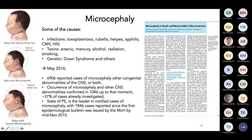Quick overview of microcephaly: what can cause it? Infections, toxins, or genetic causes. By May 2016 — about a year after the first case was flagged by the ultrasonographer in Pernambuco — nearly 7,000 reported cases of microcephaly or congenital abnormalities of the central nervous system had been reported in Brazil. Of those 7,000 suspected cases, you then need to confirm with physical examination and blood tests — that takes time. The state of Pernambuco was the leader in notified cases, with nearly 2,000 cases reported since the first epidemiological bulletin.